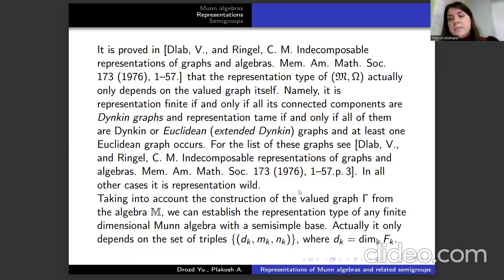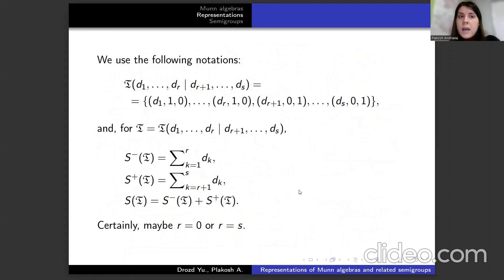For the list of these graphs, see Dlab and Ringel's paper. In all other cases, it is representation wild. Taking into account the construction of the valued graph Γ from the algebra M, we can establish the representation type of any finite-dimensional Munn algebra with a semi-simple base. Actually, it only depends on the set of triples (dₖ, mₖ, nₖ), where dₖ is dimension of Fₖ over k.